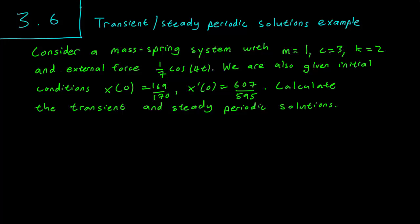So we have a mass spring system with all the information given. We have a mass of 1, a friction coefficient of 3, a spring coefficient of 2, and an external force. So let's write down our equation. Mass is 1, so the x'' term is just 1. Friction coefficient is 3, spring coefficient is 2, and our external force is cos(4t) over 7.